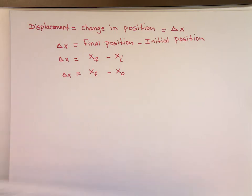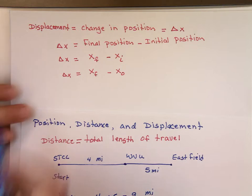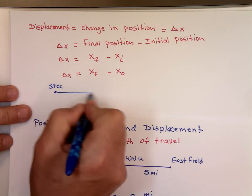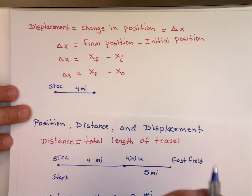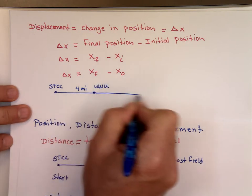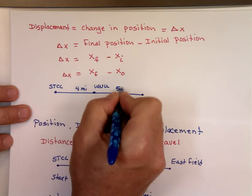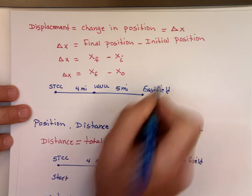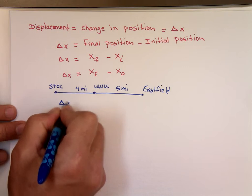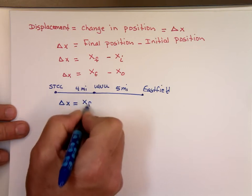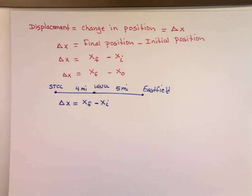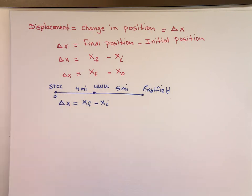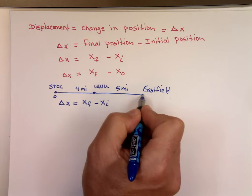Let's go back to the previous examples. The first one, you started from STCC. You traveled four miles to WinneU, and from there you traveled five miles to Eastfield Mall. What is the change or the displacement, the change in x? It is your final position minus your initial position. This is your initial position, let's mark it the zero mark here. This is your final position. How far is this point from this point?